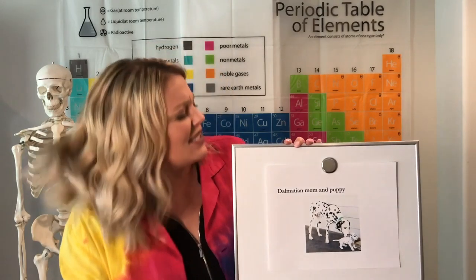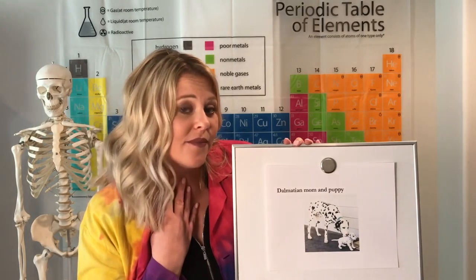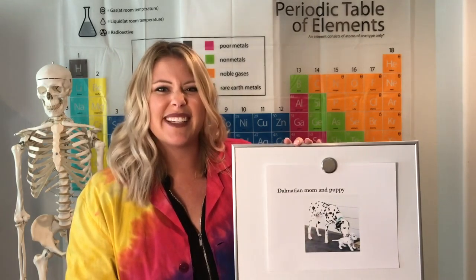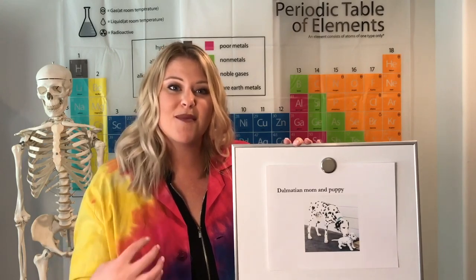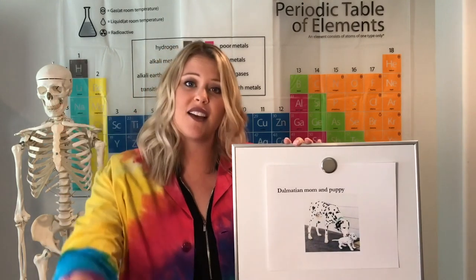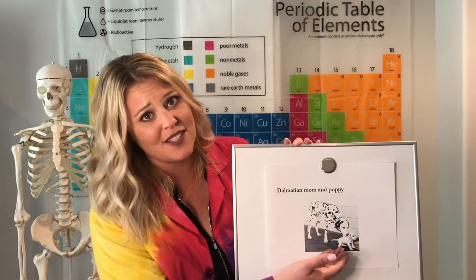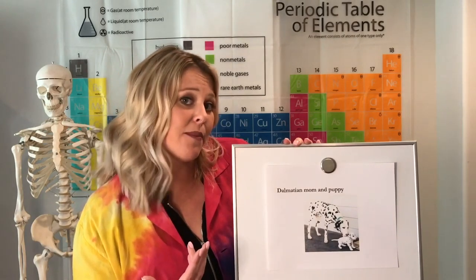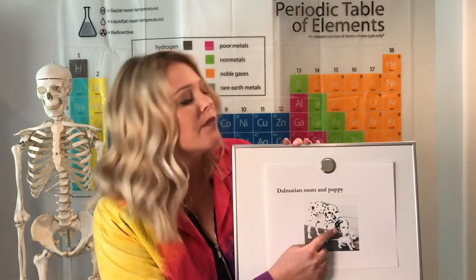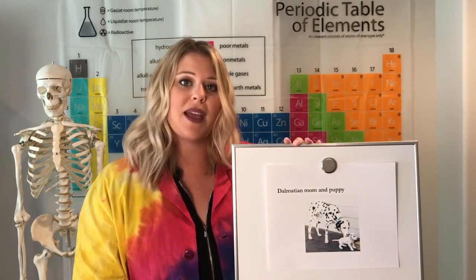Do you see a trait that's different? Well, the mom is wearing a collar and the puppy is not, but that's not a trait — that's just an accessory. A trait is something that comes from within. It comes from our DNA or our genetics — something our mom and dad pass on to us, or in this case, the mom and dad Dalmatian pass on to the baby. One trait that's different is the ears: the mom's ears are mostly black, but the baby's ears are mostly white.